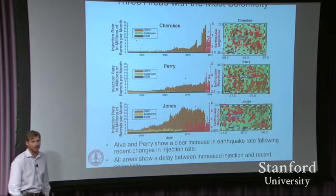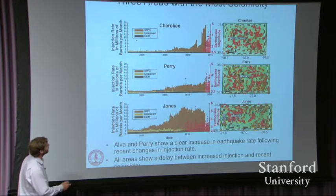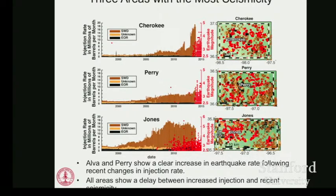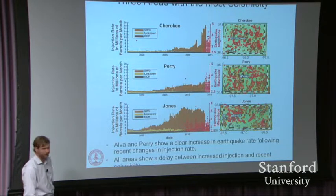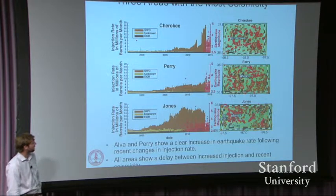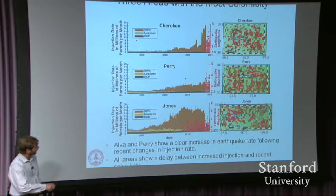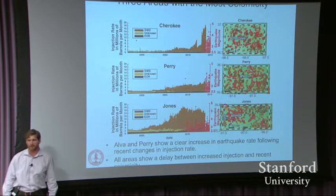Here's what the injection in each of those areas looks like through time. In Cherokee, we see very small volumes of saltwater disposal or enhanced oil recovery and then significant increases in the last several years, followed by a large number of earthquakes in the last year and a half or so. We also see increases in saltwater disposal volumes in the Perry and Jones areas, and with varying temporal relationships, earthquakes happening in each of these areas after the increase in saltwater disposal.